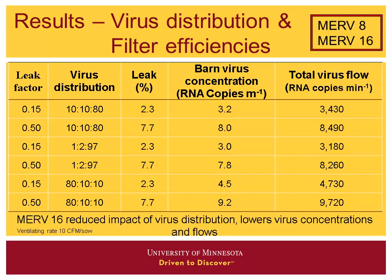Looking at different virus distributions with MERV 8 plus MERV 16: we are now collecting about 97% of those very small particles in the 0.3–1 micron range. With the MERV 16, the total virus and virus concentrations across different distributions are very, very close to each other. So MERV 16 reduced the impact of the virus distribution and lowers those virus concentrations and flows. The model indicates that using a very good filter removes a lot more virus, especially at these infiltration rates.